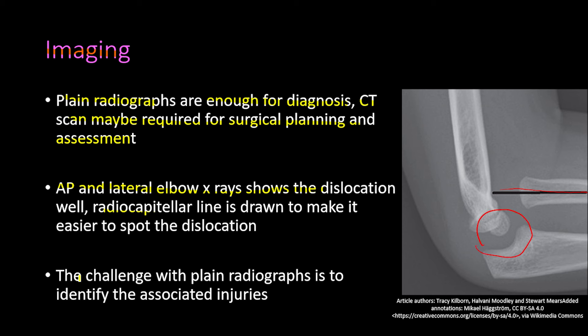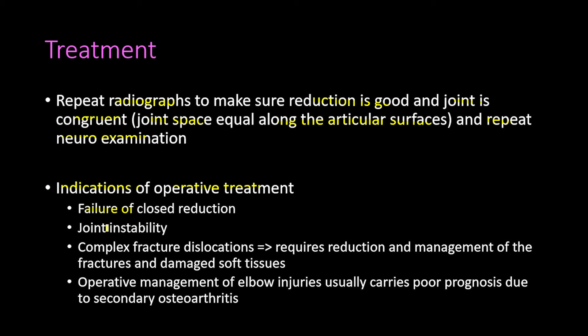Operative treatment is indicated when there is failure of closed reduction, when there is joint instability with recurrent dislocations, or when there are complex fracture-dislocations requiring reduction and management of fractures and damaged soft tissues. Operative management of elbow injuries generally carries a poor prognosis due to secondary osteoarthritis.